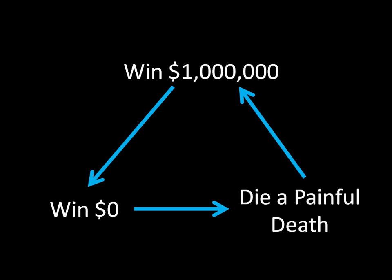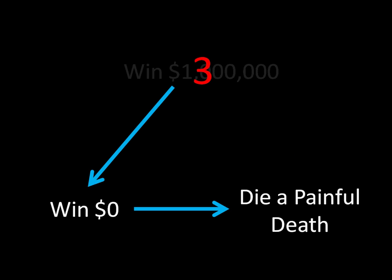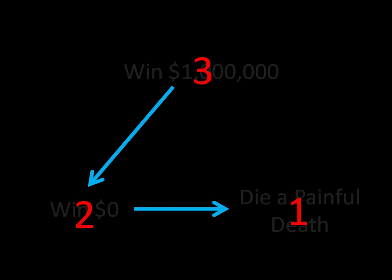The reason we need transitivity to use expected utilities is because we want to assign numbers to outcomes and represent preferences with utility numbers rather than thinking about preferences abstractly. If transitivity holds, we might say the utility for winning a million dollars is three, for winning zero dollars is two, and for dying a painful death is one. Three is greater than two and two is greater than one, so the ordering works. But if transitivity is violated, we'd need one to be greater than three, and numbers simply do not work like that.